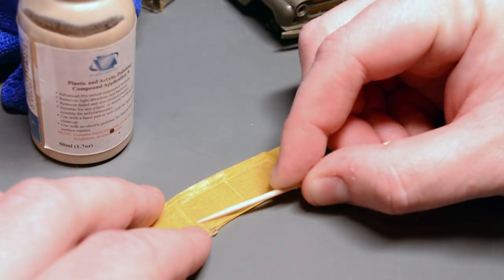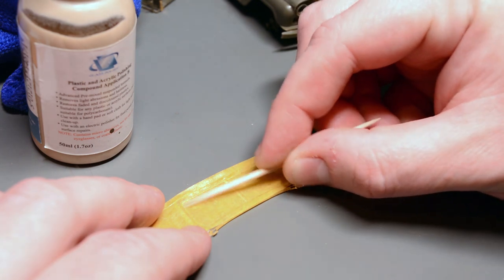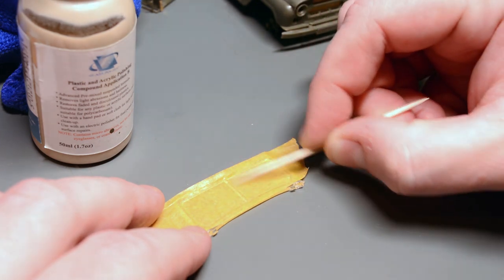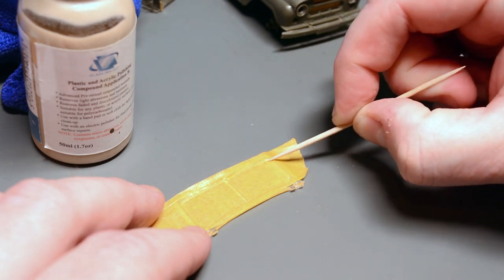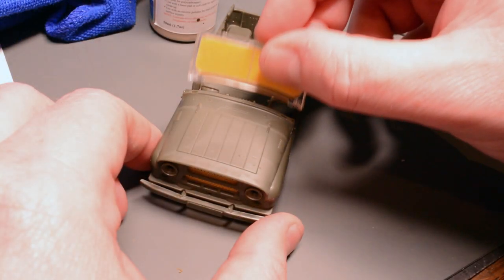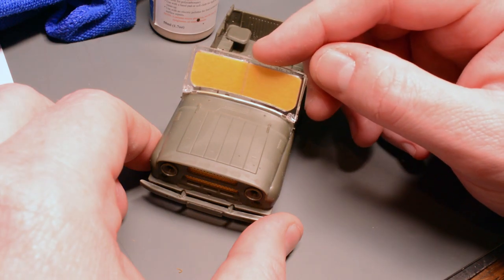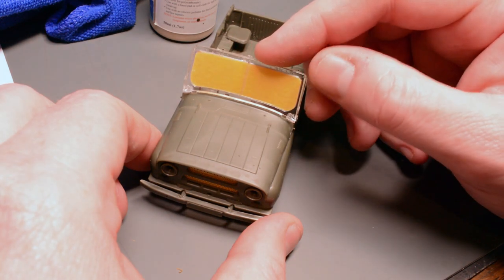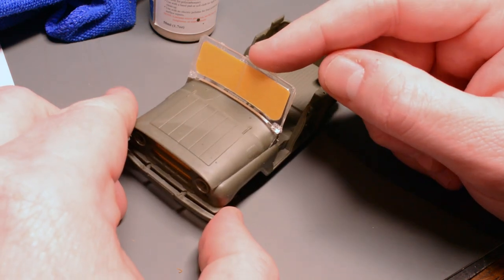Moving on with the build there was a lot of masking to do so I got busy with the yellow tape burnishing it down into the raised window frames with a cocktail stick before trimming off with a knife. Obviously anything not covered by the tape would pick up primer and base coat so wouldn't be transparent when the model was painted.